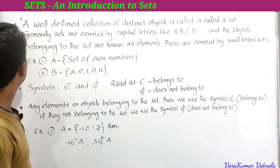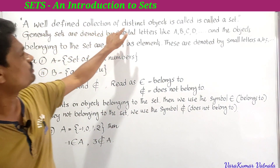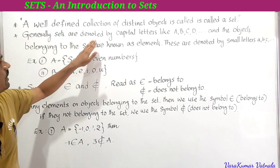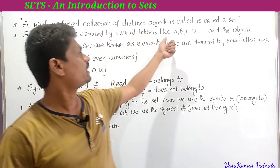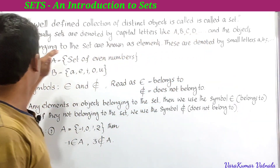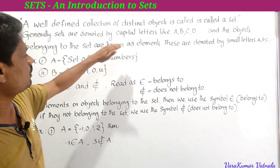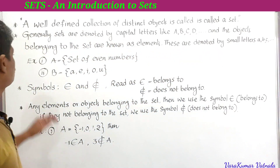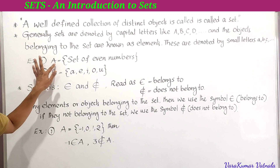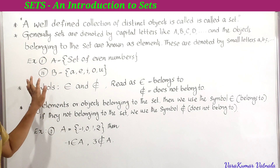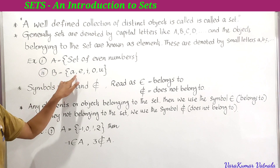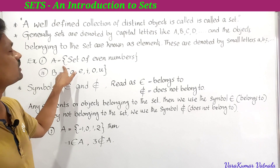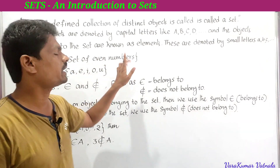For example: A = {set of even numbers}, B = {a, e, i, o, u}. We use these brackets — called curly brackets or flower brackets — to denote sets.